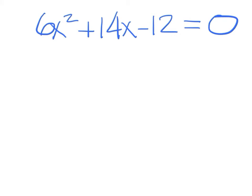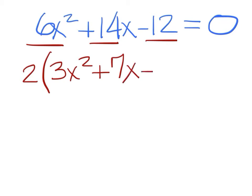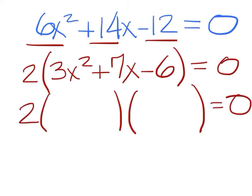The practice problem is six x squared plus fourteen x minus twelve equals zero. You can divide something out of all three of those. What is it? Two. If you take a two out, what are you left with? Three x squared plus seven x minus six. Now, we can try to factor this set of parentheses into two different sets.